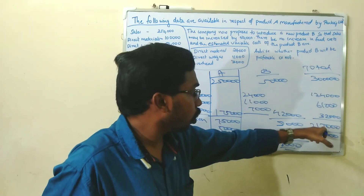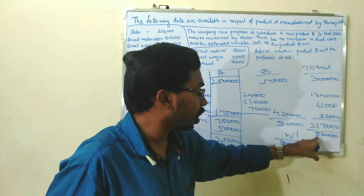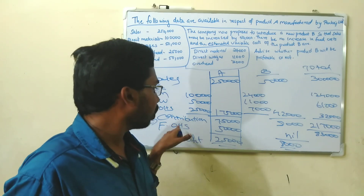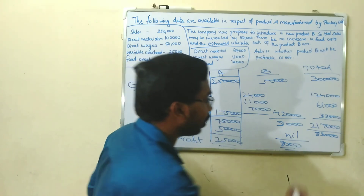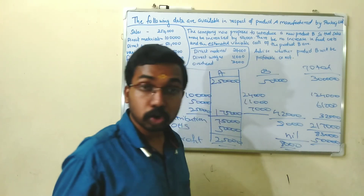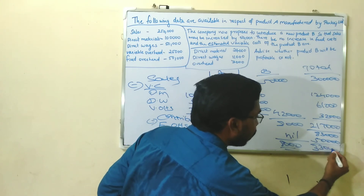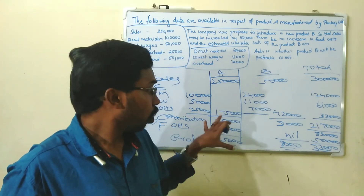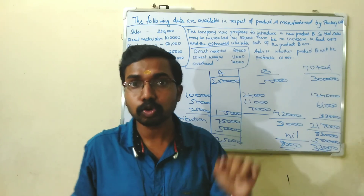Total variable cost is 2,17,000 rupees. Sales 3,00,000 minus variable cost 2,17,000 = Contribution 83,000. Contribution 83,000 minus Fixed overhead 50,000 = Total profit 33,000 rupees. Already 25,000 plus 8,000 equals 33,000 rupees — this confirms the calculation.